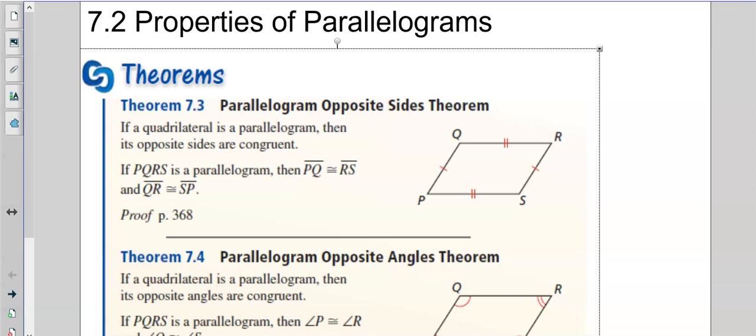Alright, 7.2 properties of parallelograms. Now remember, the key word term here in parallelograms is parallel. So opposite sides are parallel.